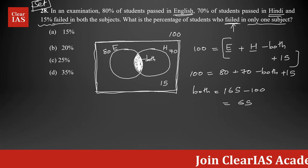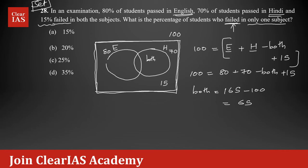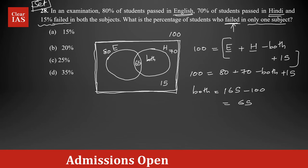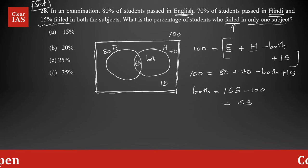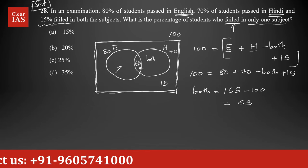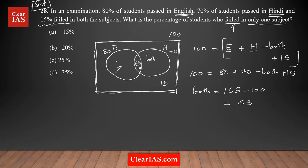So 65 of them passed in both exams. Keep in mind: 80 passed in English — that's a combination of those who passed only in English plus those who passed in both. So those who passed only in English = 80 − 65 = 15. That means 15 students passed only in English, which means they failed in Hindi. Similarly, only-Hindi passers = 70 − 65 = 5, meaning they passed only Hindi and failed in English.